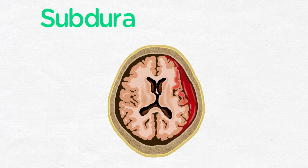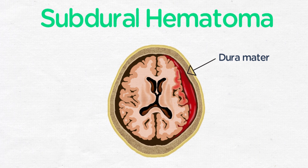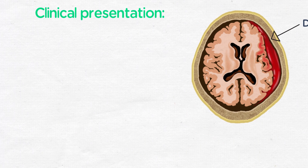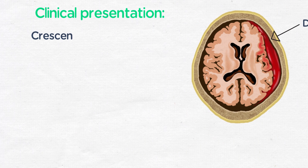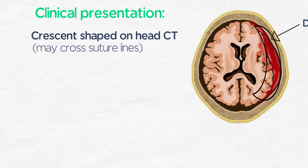The subdural hematoma is a collection of blood that accumulates between the brain and the dura mater. They typically originate from damage to the meningeal veins, specifically the bridging veins. Often on head CT, these are crescent-shaped, and they may cross the suture lines.